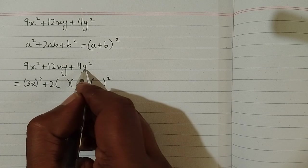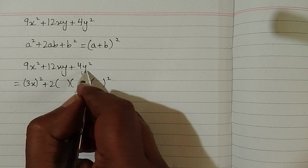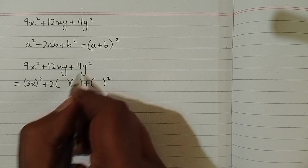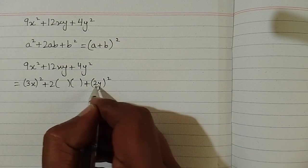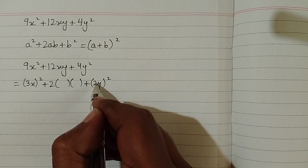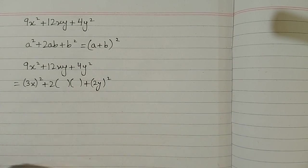And then we look at the last term of the expression which is 4y square. So we can write 2y in the bracket because square of 2 is 4 and square of y is y square.